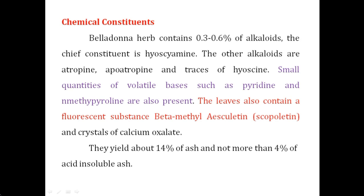The leaves also contain one fluorescent substance — beta-methyl-esculetin, also called scopoletin — important from the Manipal entrance examination point of view. The drug also contains crystals of calcium oxalate. Ash value should be around 14% and acid-insoluble ash should not be more than 4%. Key chemical constituents to remember: hyoscyamine, atropine, hyoscine, pyridine, N-methylpyrrolidine, and scopoletin (beta-methyl-esculetin).